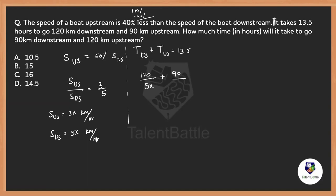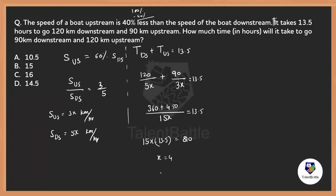Taking the LCM and solving: (360 + 450) divided by 15x equals 13.5. Solving this equation gives x equals 4. So speed of upstream is 3x, which is 12 kilometers per hour, and speed of downstream is 5x, which is 20 kilometers per hour.